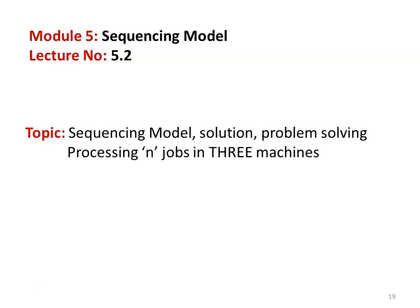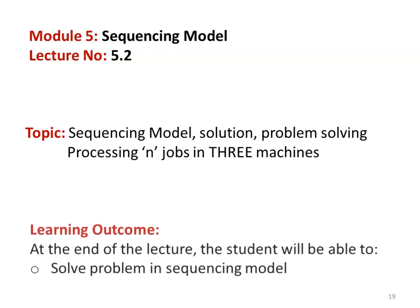The topic for the second lecture is again the sequencing model. We have discussed the different sequencing models in the earlier lecture and solved problems in processing n jobs in two machines. Now, in this lecture, we will be discussing processing n jobs in three machines, including the problem solution procedure and problem solving. The learning outcome: at the end of the lecture, the student will be able to solve problems in the sequencing model.